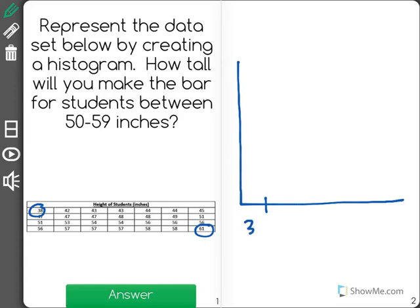My first bar will represent 30 to 39 inches. Notice how it's not just a single value, but all values between 30 and 39. Next I'll have 40 to 49, then 50 to 59, and finally 60 to 69.